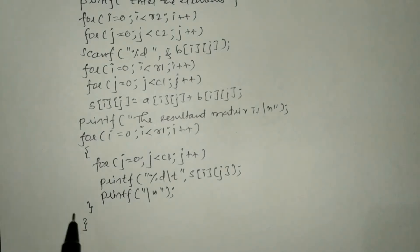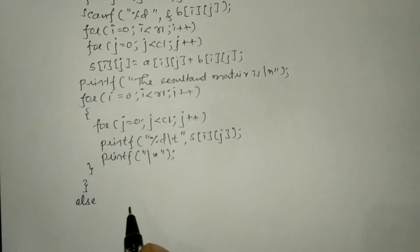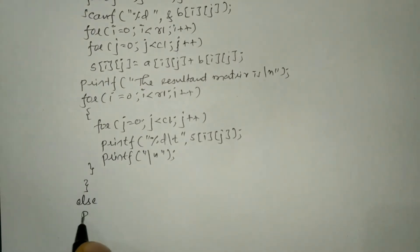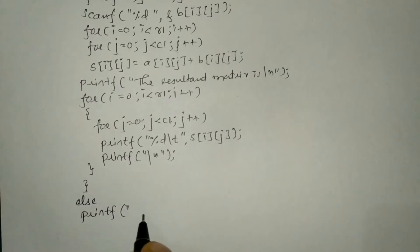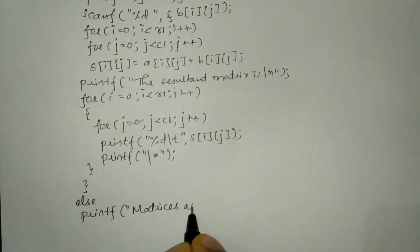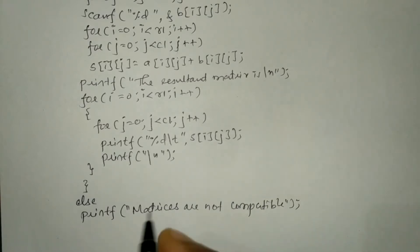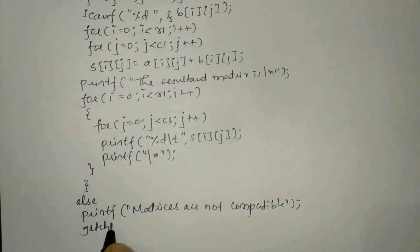After the if block, the else part is checked. Here we write printf 'matrices are not compatible' — if the number of rows and columns are different this statement will be printed. Then we write the getch function and the closing brace for the main function.